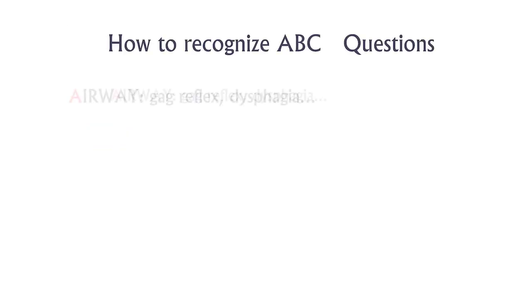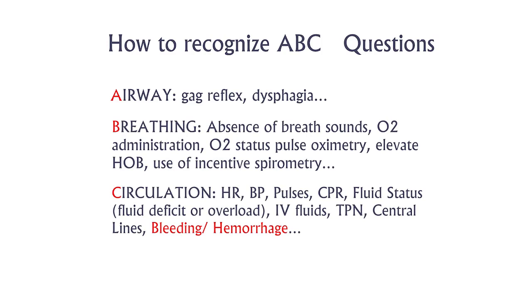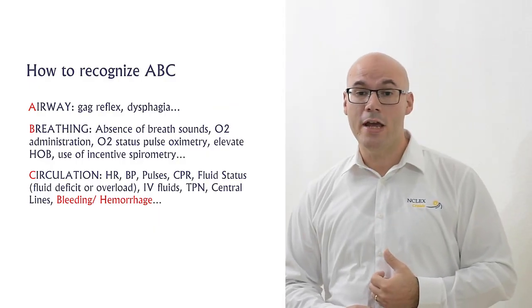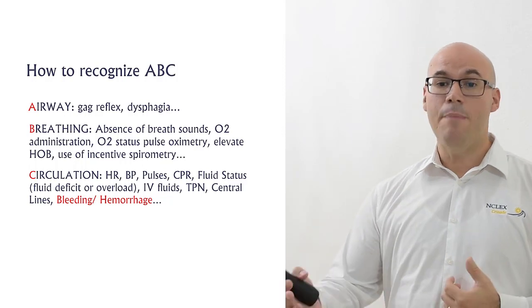In the NCLEX, you may see words such as diminished gag reflex or dysphagia to represent an airway problem. You might not see the word breathing, but you could see administration of oxygen, absence of breath sounds, or use of incentive spirometer. Instead of using the word circulation, you may see blood pressure or pulses.